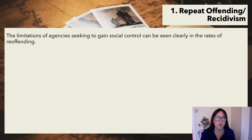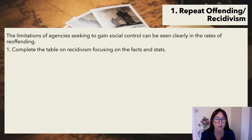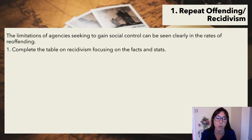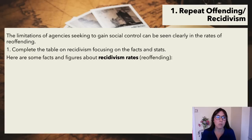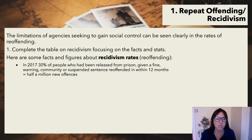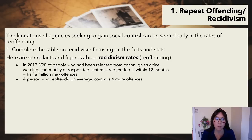Repeat offending or recidivism. The limitations of agencies seeking to gain social control can be seen clearly in the rates of re-offending. Here are some facts and figures about recidivism rates. In 2017, 30% of people who had been released from prison, given a fine, warning, community or suspended sentence re-offended within 12 months — that's half a million new offences. A person who re-offends on average commits four more offences.